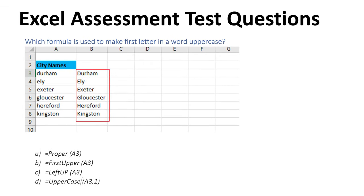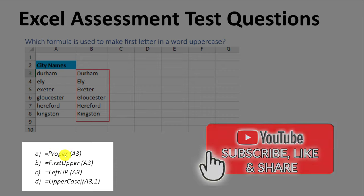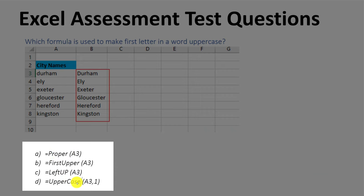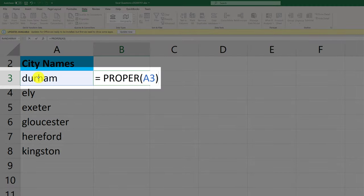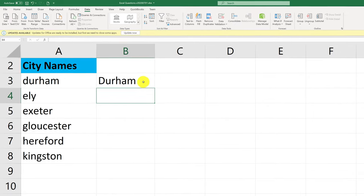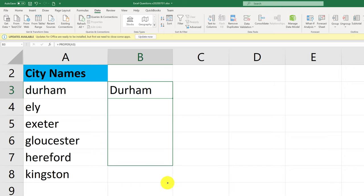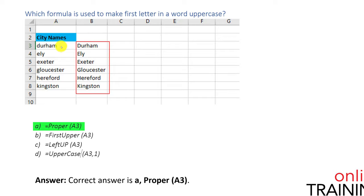Which formula is used to make the first letter in a word uppercase? All values in column A are lowercase, and column B shows the same values with only the first character uppercase. Four choices: PROPER, FIRST UPPER, LEFT UP, and UPPERCASE. The correct answer is to use the PROPER function. You type PROPER and reference the cell — for example, PROPER(A3) — and the value is converted with the first letter uppercase and remaining letters lowercase. Correct answer is A, PROPER.